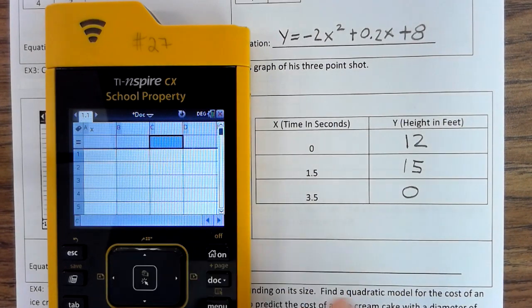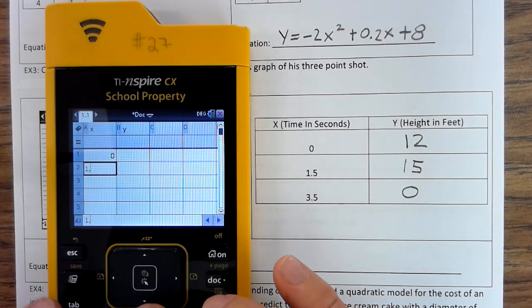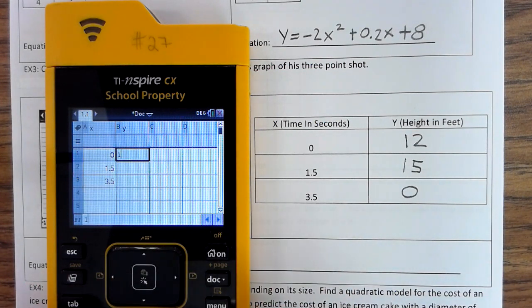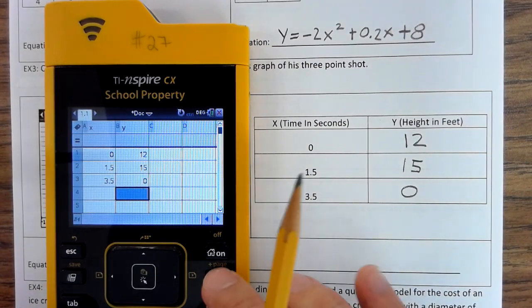X, Y, 0, 1.5, 3.5, 12, 15, 0. We're going to press Ctrl-Doc, number 5.